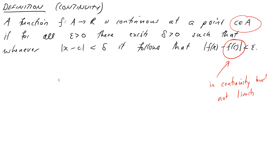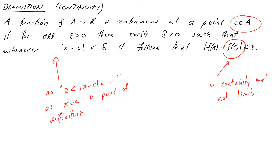The second difference is that in the limit definition we had 0 < |x − c| < delta — we don't have that strict lower bound here, because we are actually allowed to have x equal to c when looking at continuity. When dealing with continuous functions we do care what happens at the point in question, not just sequences of points around it. The third difference is that c is just a point in the domain, not necessarily a limit point — in the limit definition we required c to be a limit point, but here we require it to be a member of the domain.